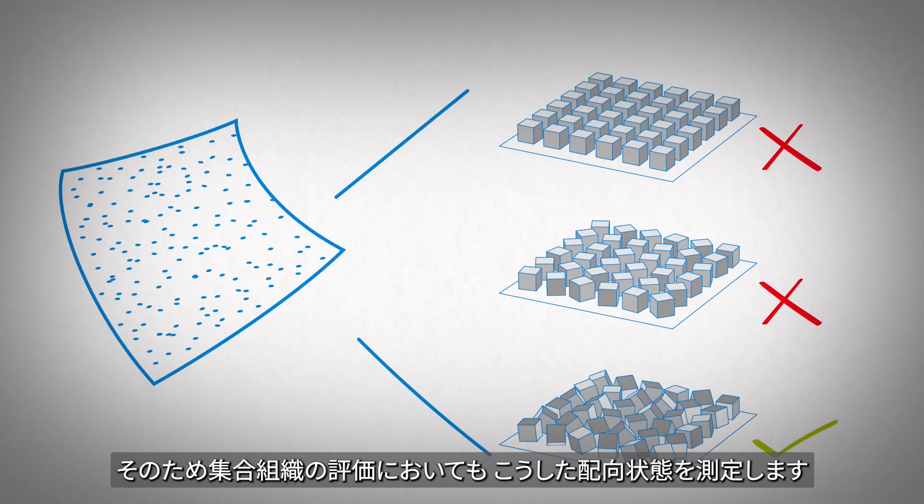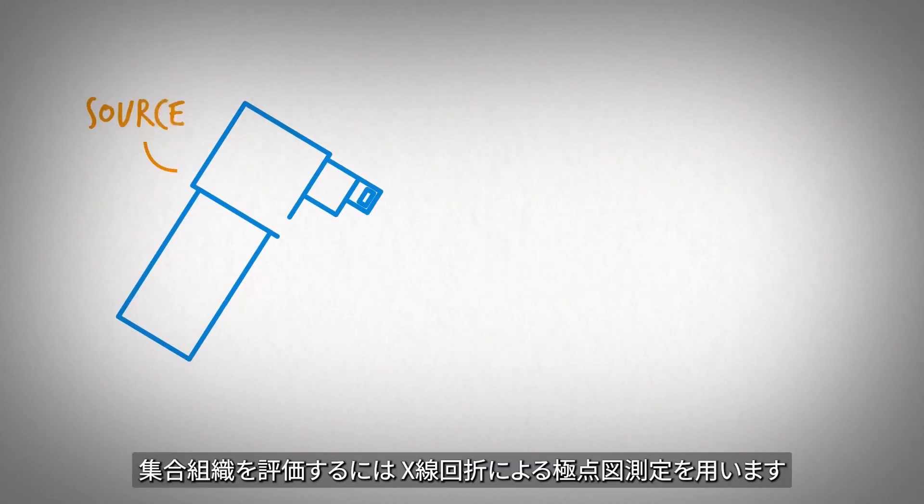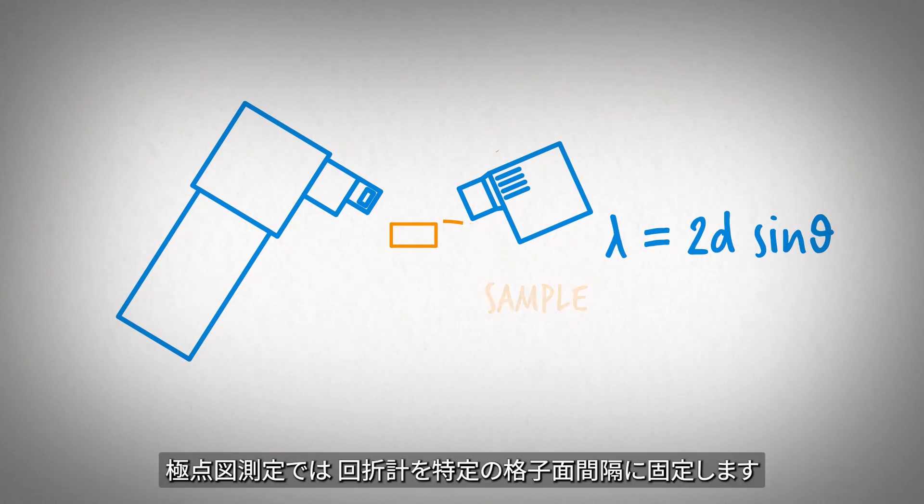The orientation of crystals is what's measured in a texture experiment. In order to measure the texture of a material, X-ray diffraction is used. X-ray diffraction is a technique sensitive to the atomic distances in a material. In a texture experiment, the instrument is locked onto a single atomic spacing.